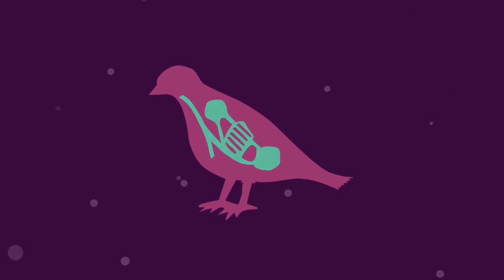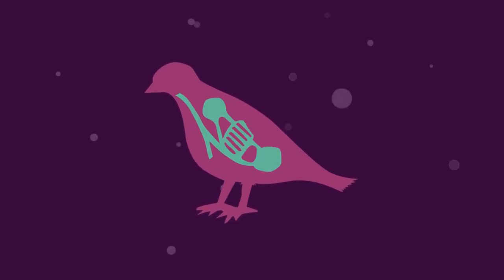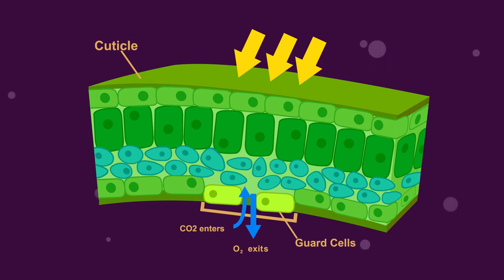Animals get the oxygen needed from the air through their ventilation systems. Plants get their oxygen from the air through the stomata.